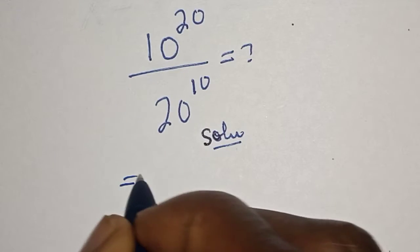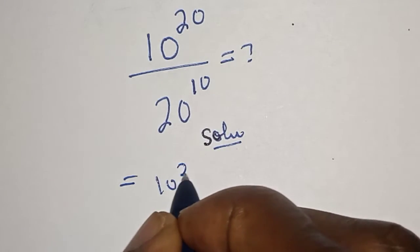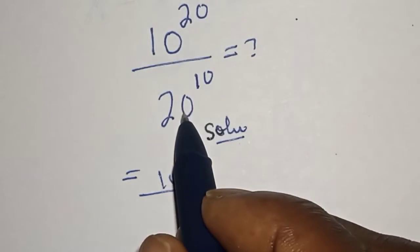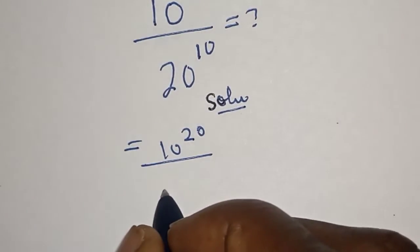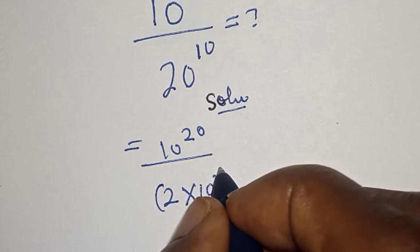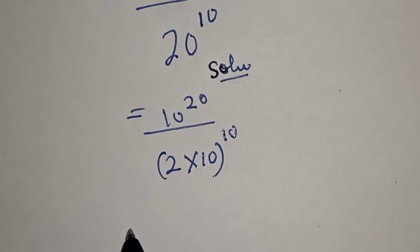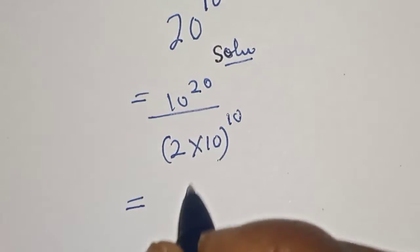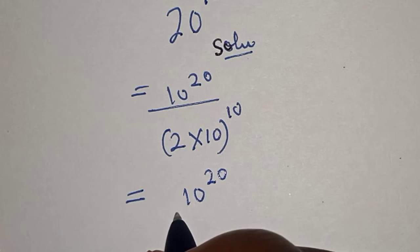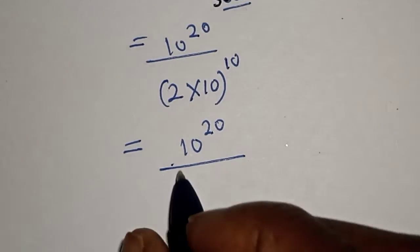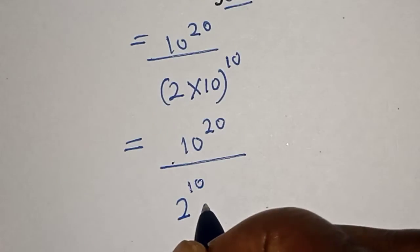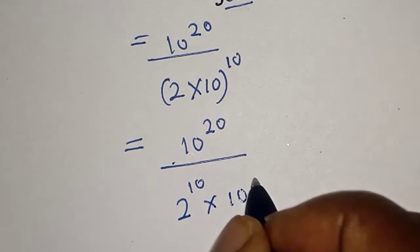10 raised to power 20 over 20 raised to power 10 can be written as 10 raised to power 20 over 2 multiplied by 10, raised to power 10.